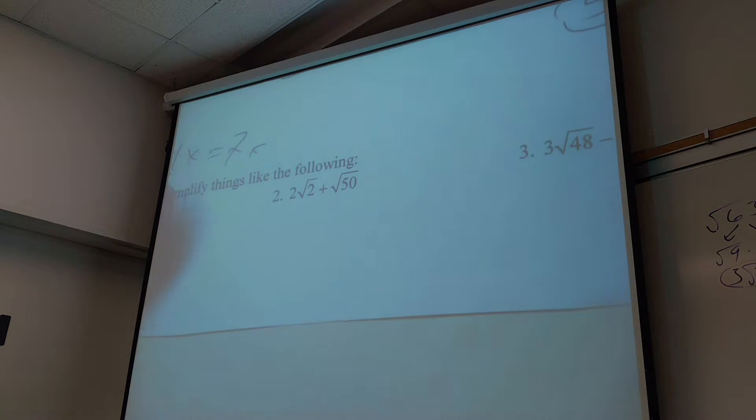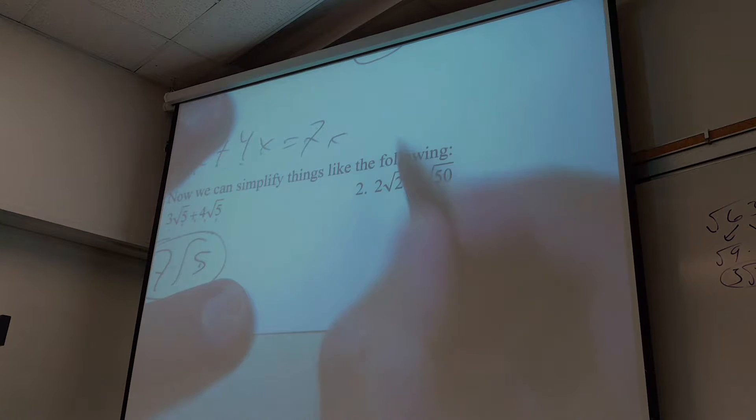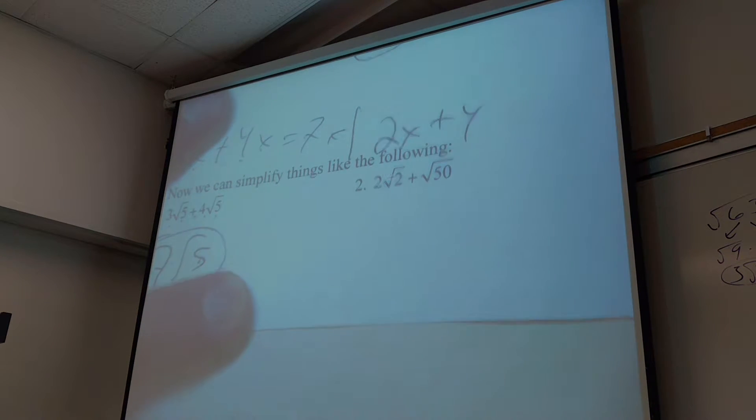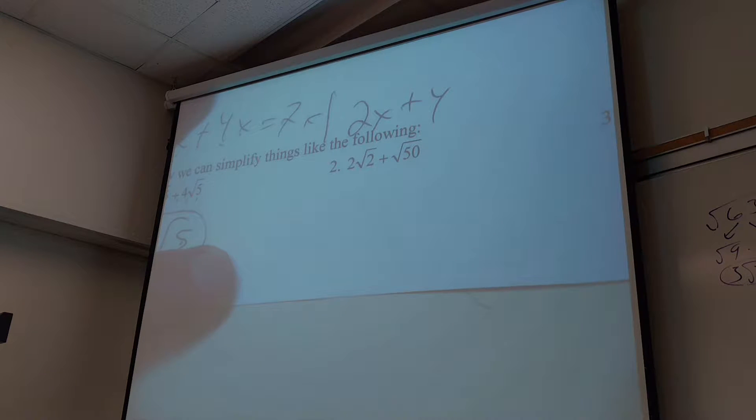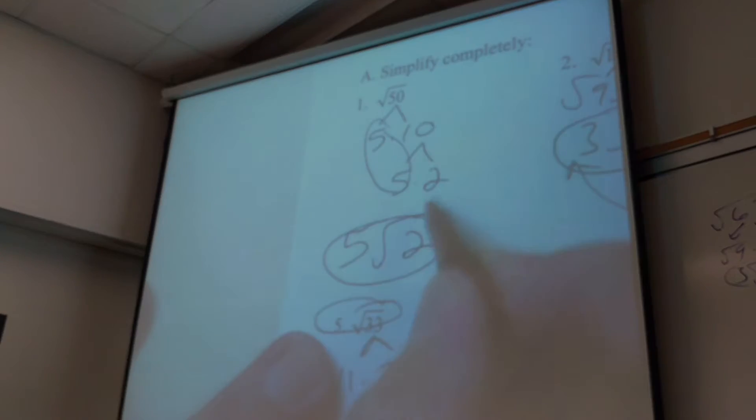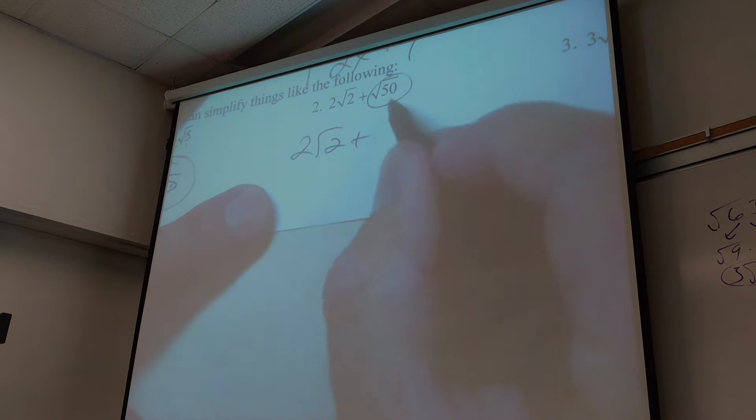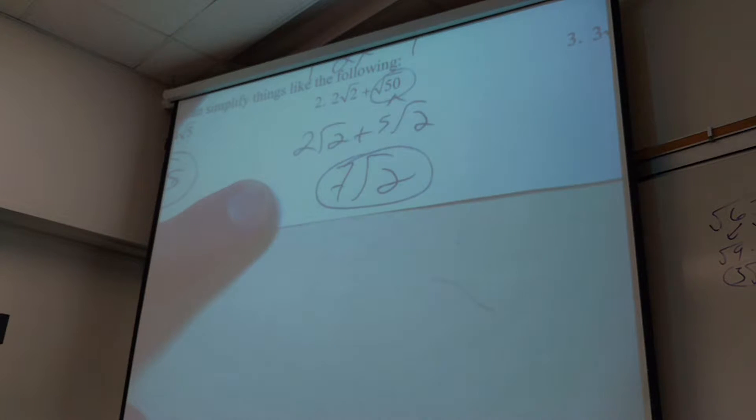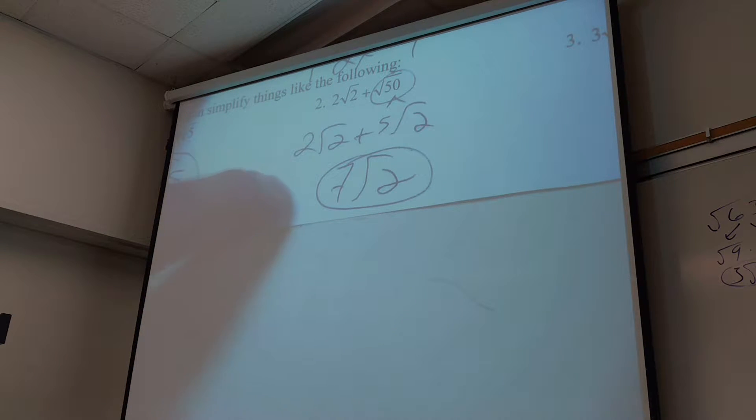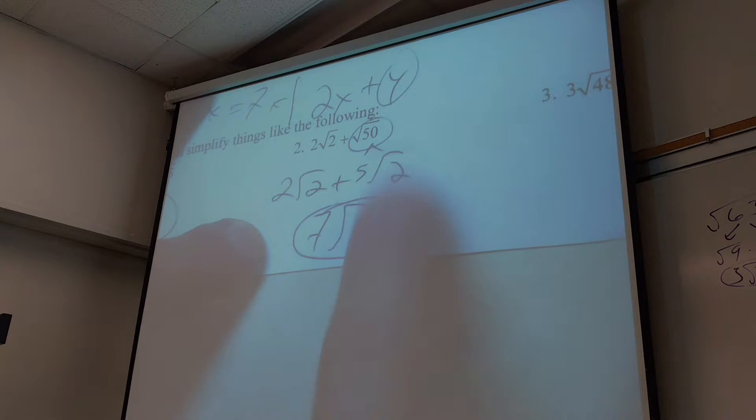Get excited. Now do you see how this is more like two X plus Y right now? Because I got two radical twos and one radical fifty. I can't put those together. I don't want to see no two radical fifty-two. You can't add them because they're not like terms. But what can I do with fifty? We already did it. Isn't radical fifty five radical two? So I got two radical two plus five radical two is seven radical two. It's just like terms.